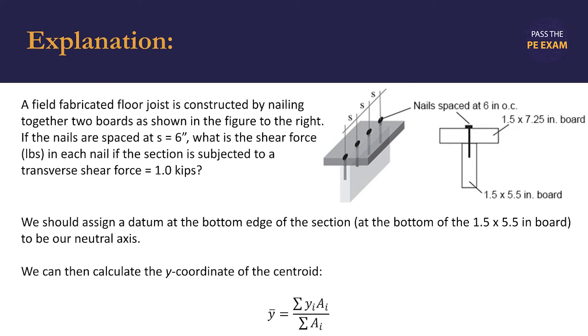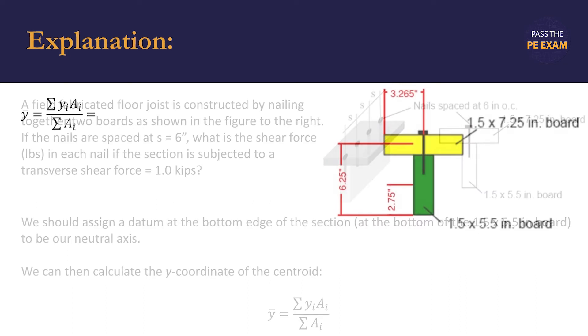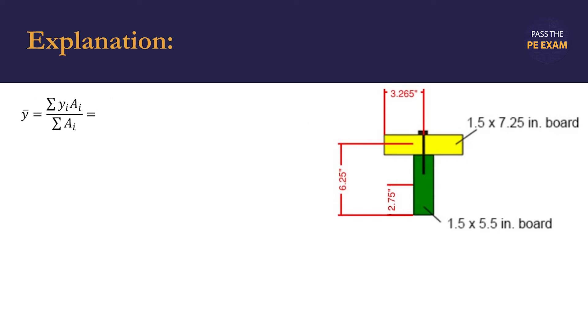Referencing the PE handbook, we have the following equation: y-bar equals sigma y-sub-i times a-sub-i divided by sigma a-sub-i. In order to approach this problem, we need to separate the joists into two shapes: the top rectangle shown in yellow and the bottom rectangle shown in green. These are our two boards that are nailed together. Y-sub-i is the distance in the y-direction from the datum that we assigned and is shown in the graphic to the right. A-sub-i is the area of the section.